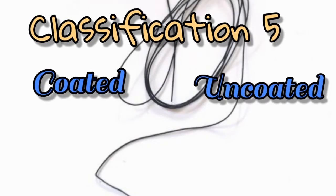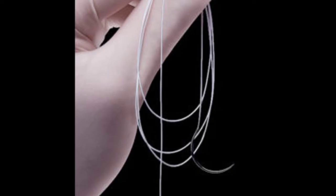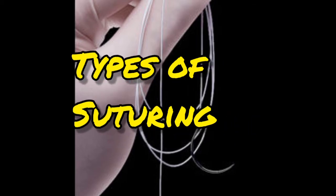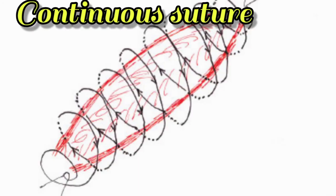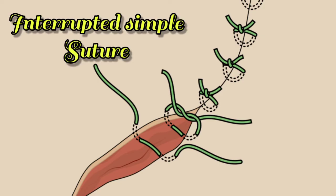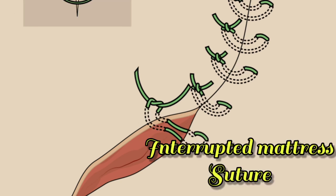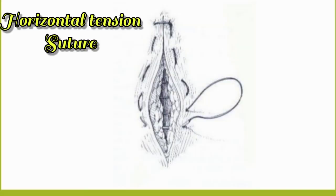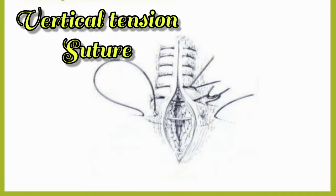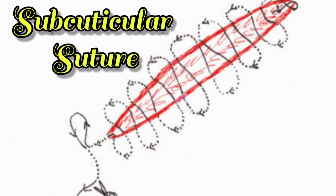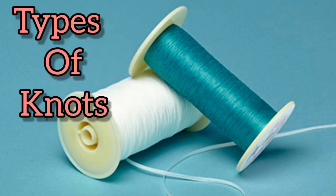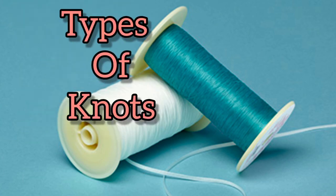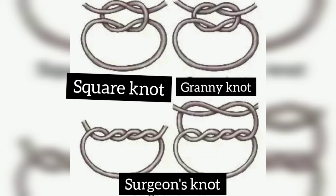Classification 5 is coated and uncoated. Types of suturing include: continuous suture, interrupted simple suture, interrupted mattress suture, horizontal tension sutures, vertical tension sutures, and subcuticular suture. Types of knots include the square knot, granny knot, and surgeon knot.